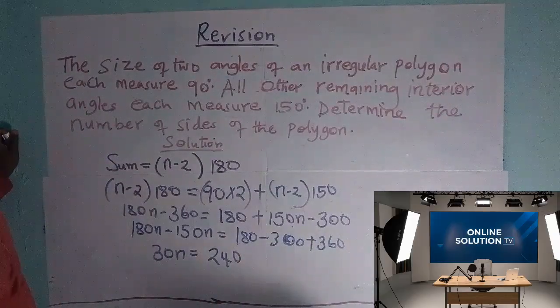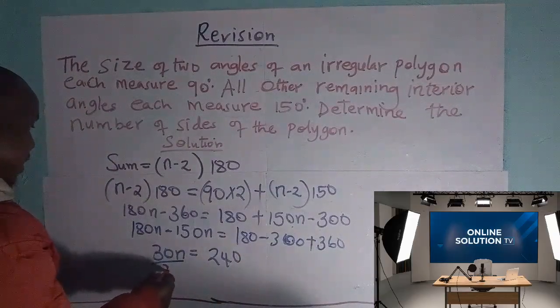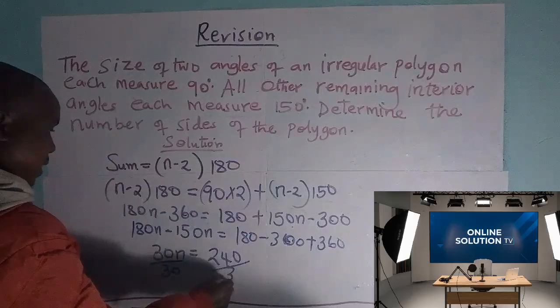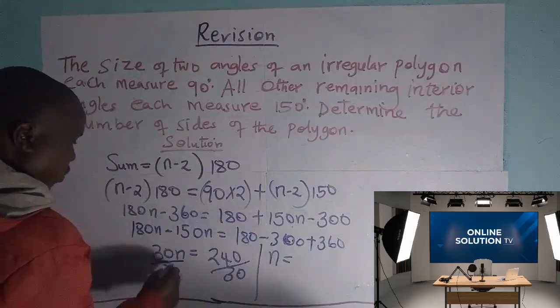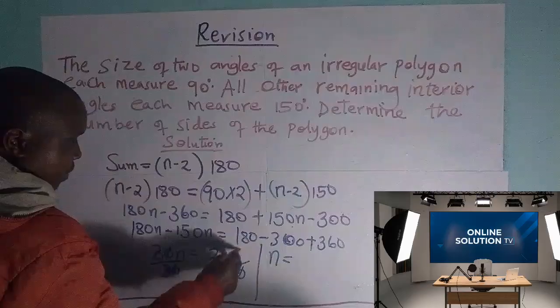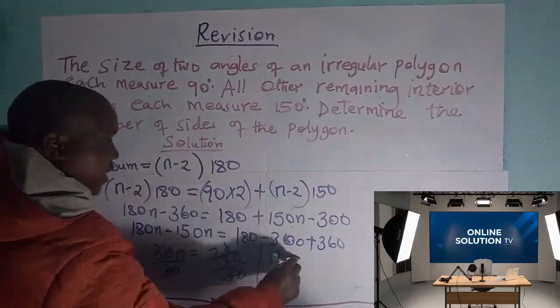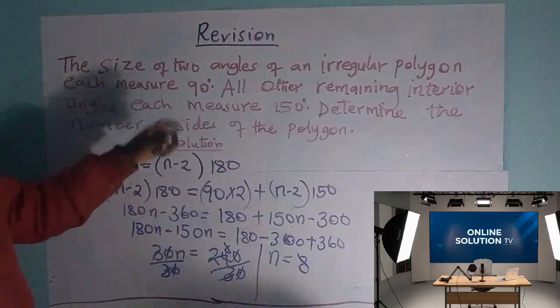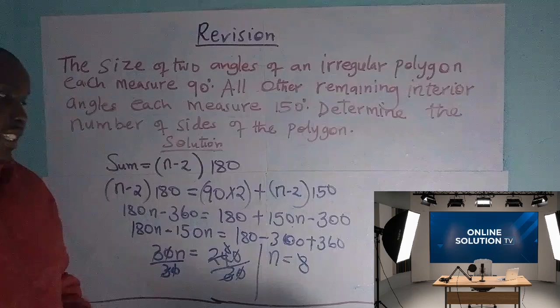We want a value of n, that's the number of sides. Divided by both sides by 30, therefore n is equal to 8. So this irregular polygon has got 8 sides.